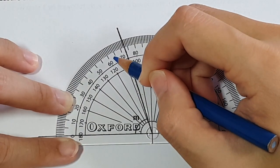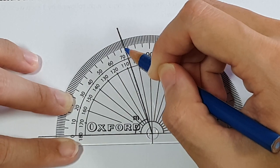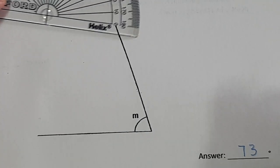So this is 60, 70, 71, 72, 73. 73 degrees.